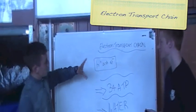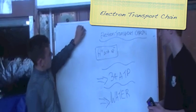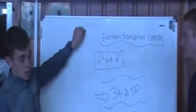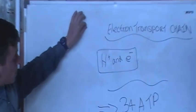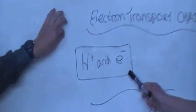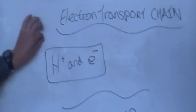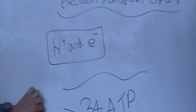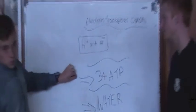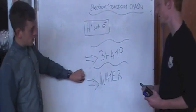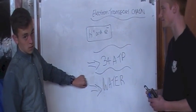The electron transport chain: the hydrogen and electrons from the Krebs cycle are then transported into the electron transport chain. 34 ATP molecules are produced, and water is a by-product of this.